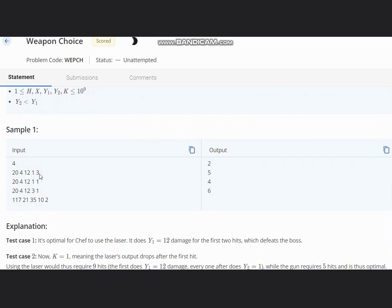So here we have K equal to 1, and Y1 equal to 12, so 12 × 3 that's 36. And for 20, if we divide 20 by 12 we will get 1.6 something which will be rounded off to 2.